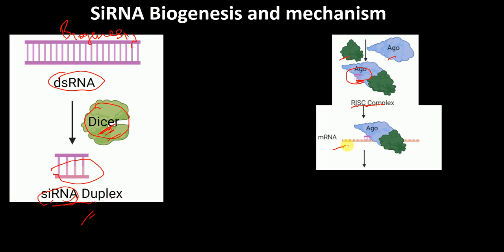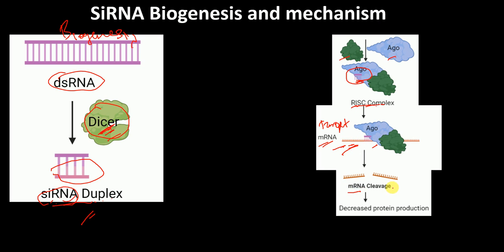The RISC is guided to the target mRNA because the guide strand has sequences complementary to the target mRNA. The Argonaute protein and other proteins within the RNA-induced silencing complex then cleave the target mRNA. So the function of siRNA here is to guide the RISC to the target mRNA, and once bound, the RISC cleaves the target mRNA, resulting in mRNA cleavage or mRNA degradation.